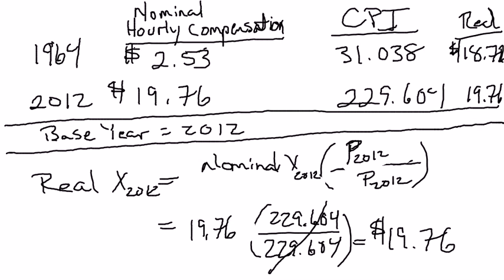This shows you how to calculate the difference between real and nominal wages. If you think back to how we calculated real versus nominal GDP, we used a very similar formula. Anytime you're asked to calculate a real variable from a nominal variable and the price level, you use exactly the same formula: real variable equals nominal variable times the ratio of prices, where the price level in the numerator is the base period price and the denominator is the current year price level. This applies whether I'm asking you to calculate real GDP, real consumption expenditures, real government expenditures, and so on.